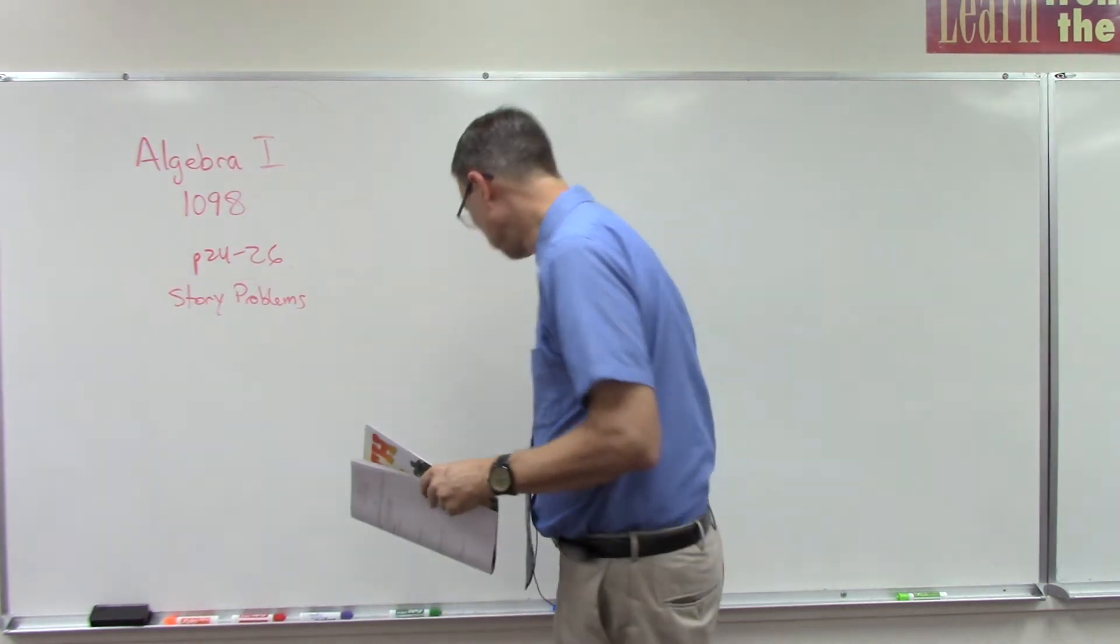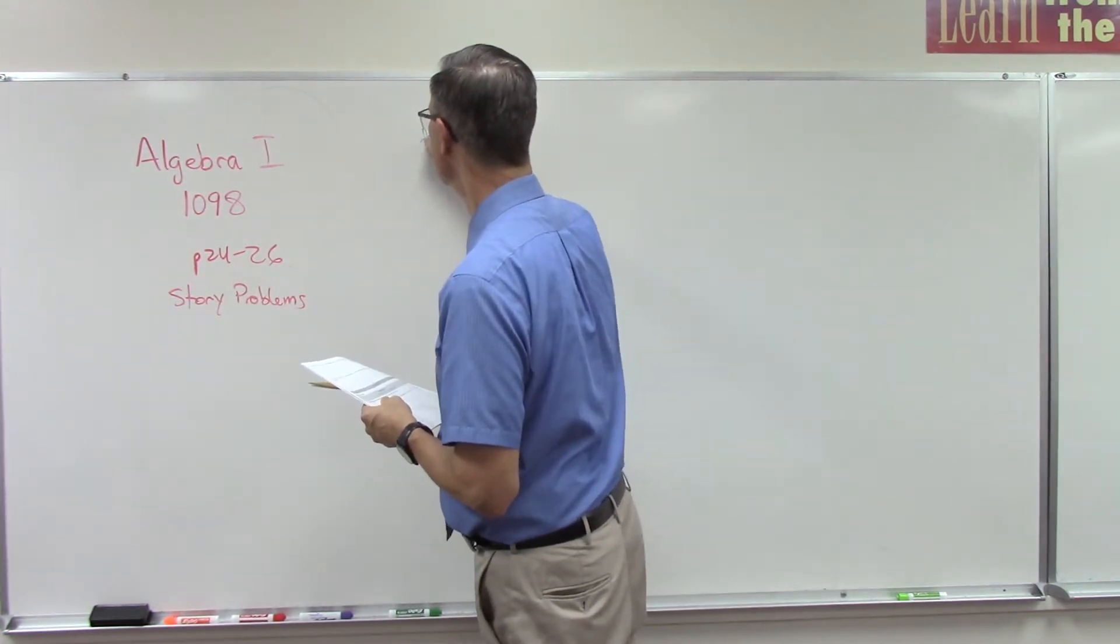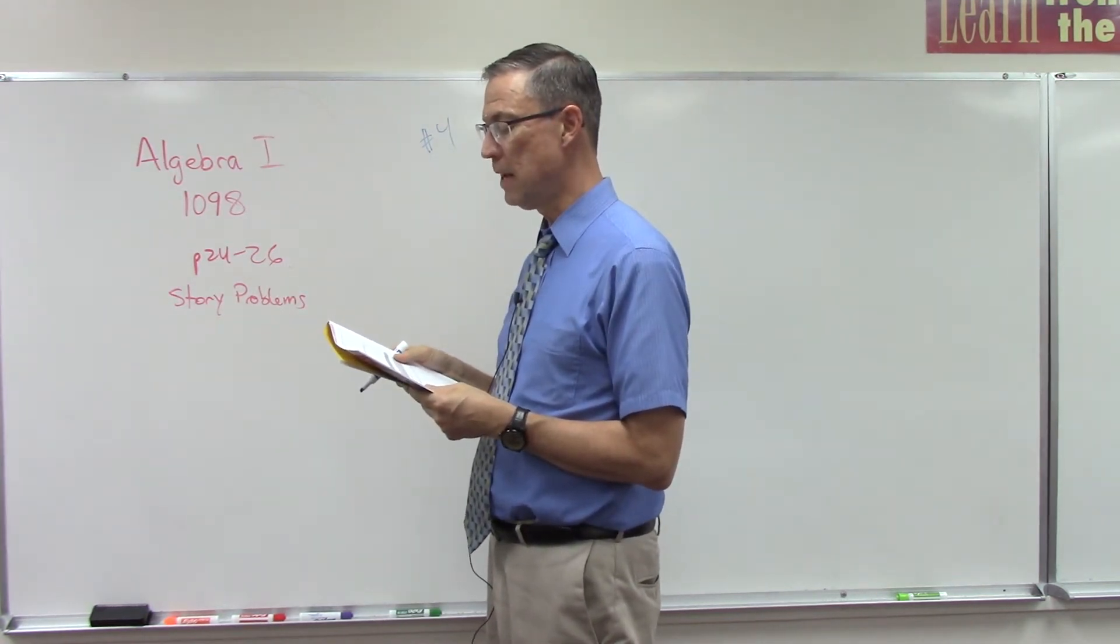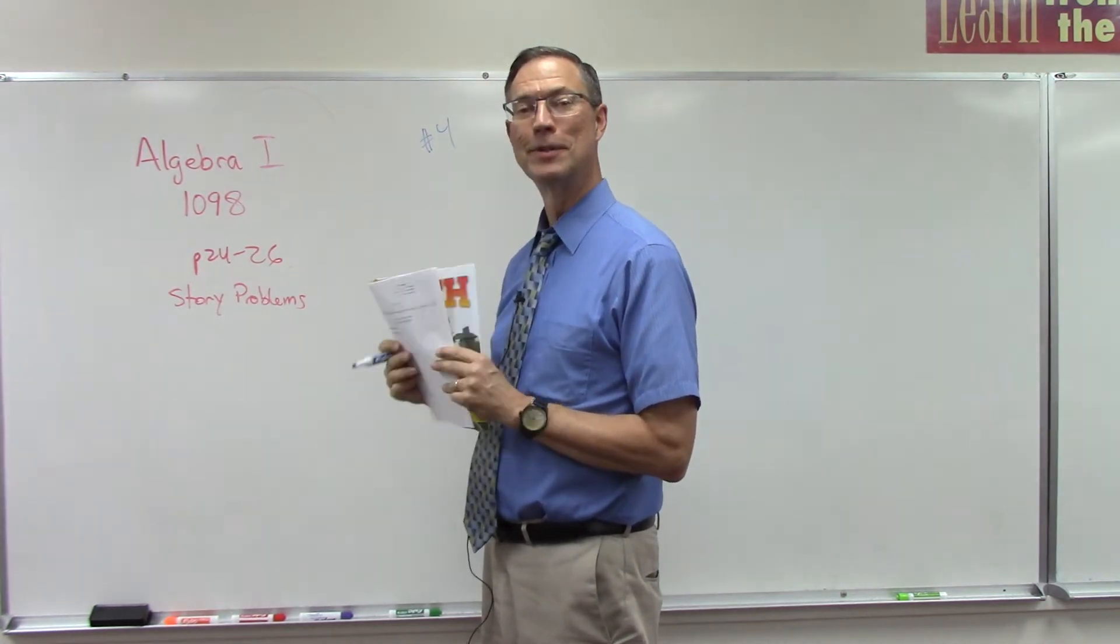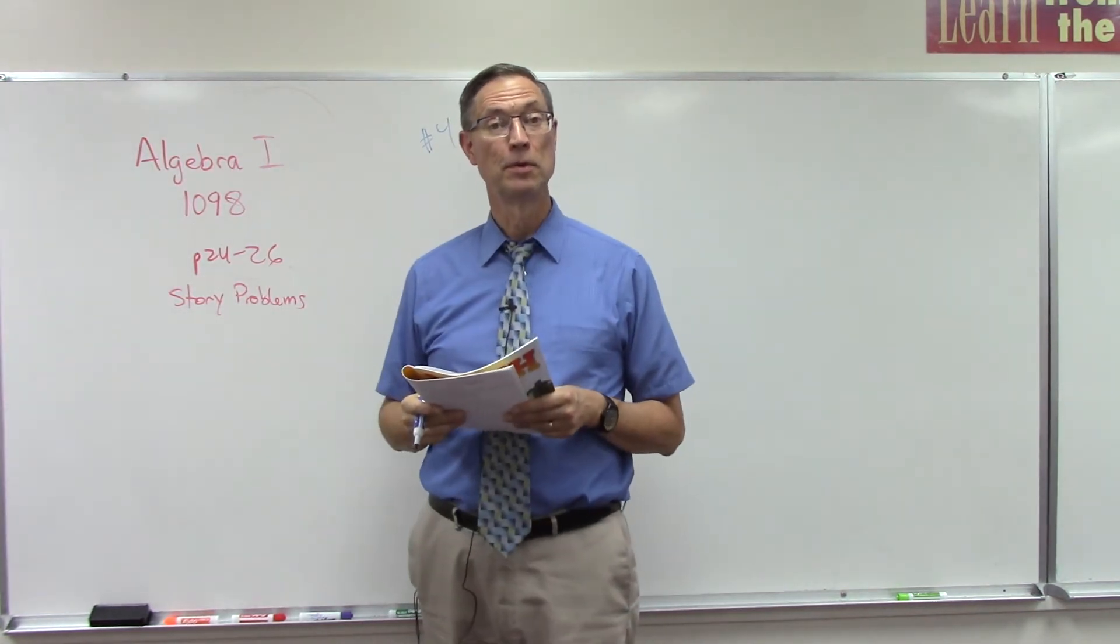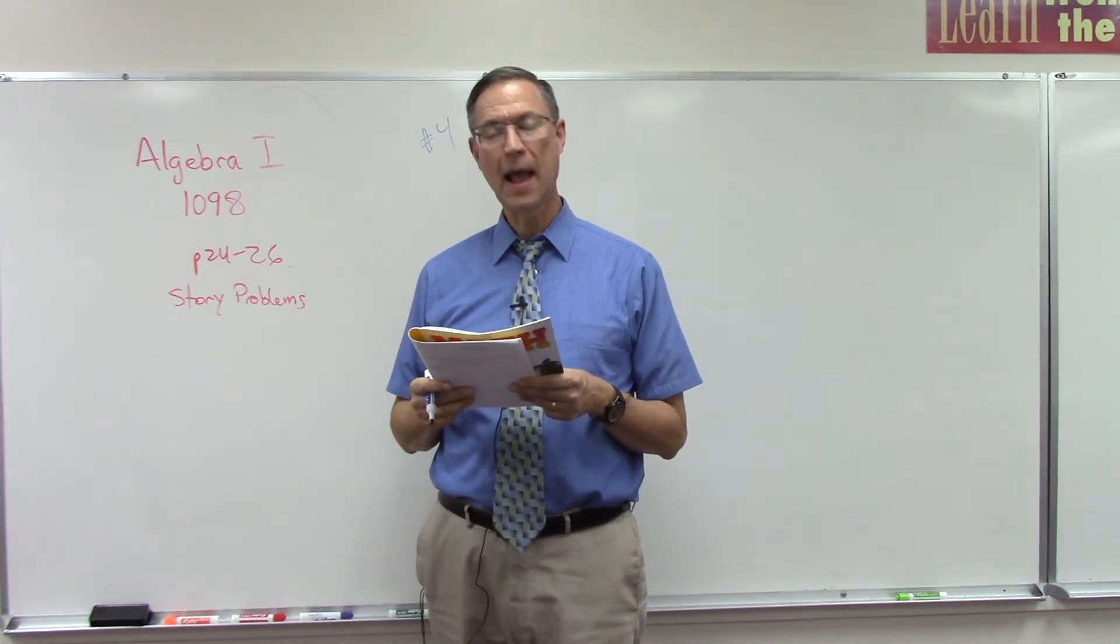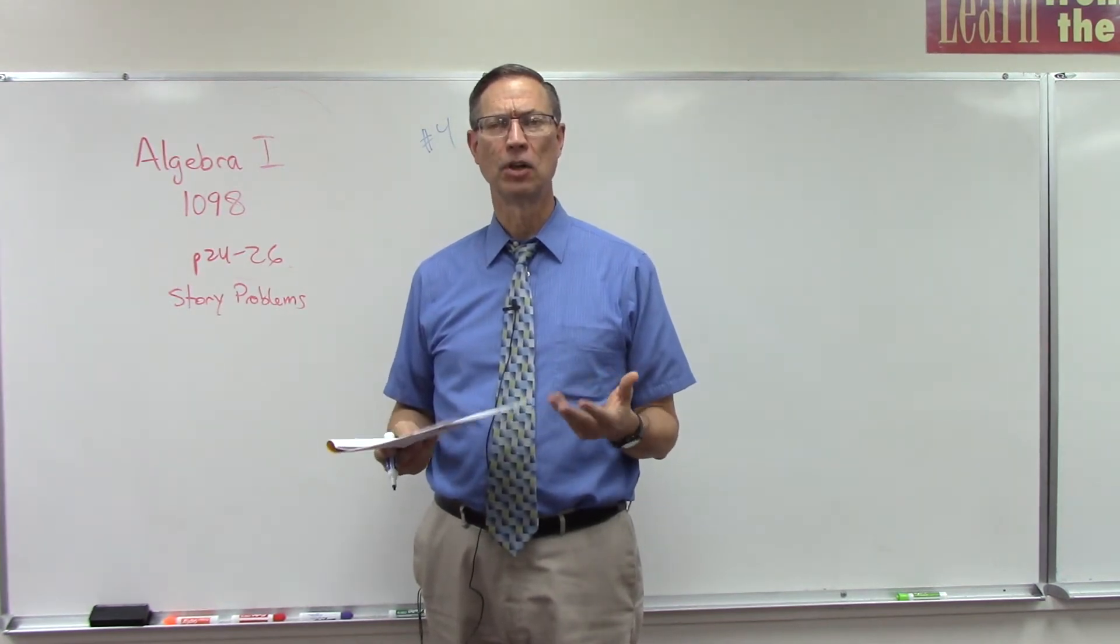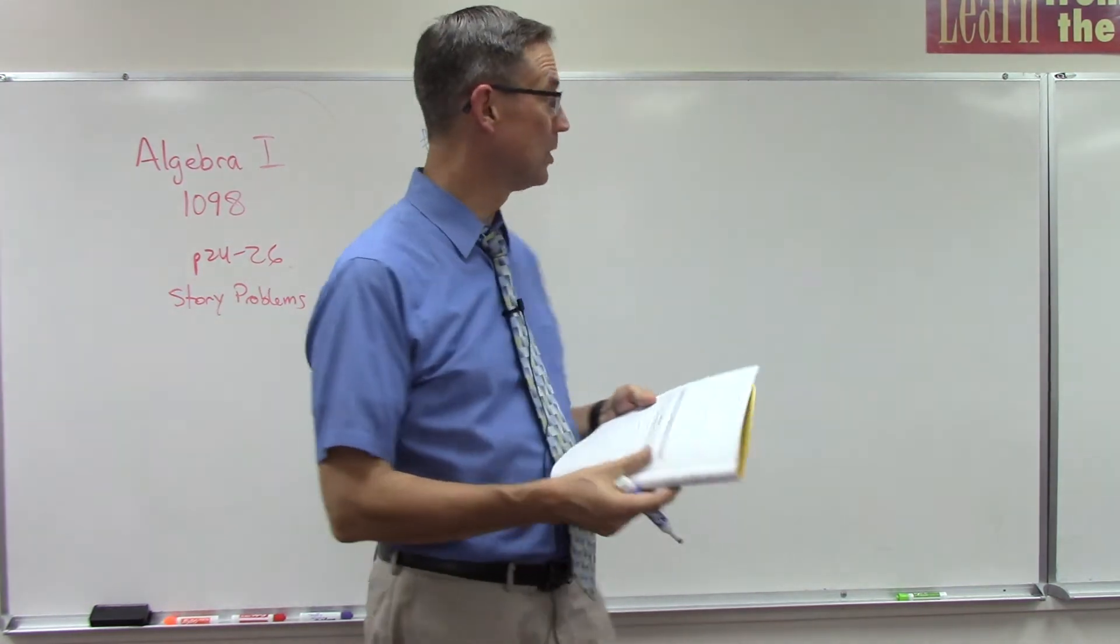Let's talk our way through number 4 on page 26. It says: the sum of two numbers is 23. Twice the greater number added to three times the smaller number is 57. Find the numbers. Most students at this point, and maybe even some of their parents who are not too math savvy, are looking at that and saying... By the way, can you tell I got a haircut? I feel kind of lightheaded, but I'll do my best to introduce this lesson.